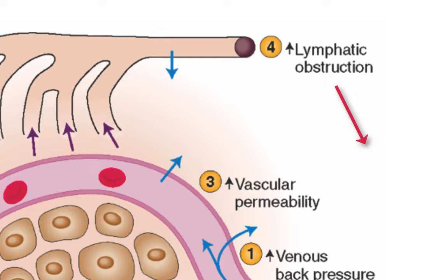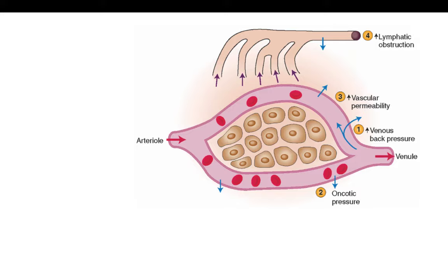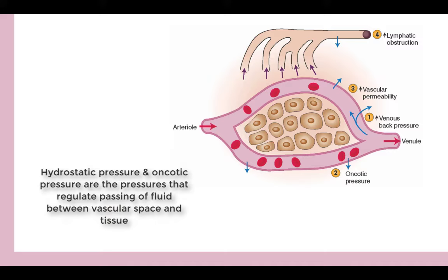So what are the factors that determine how much fluid passes to the tissue? There are two kinds of pressure that play a role: hydrostatic pressure and oncotic pressure. Also important is the permeability of the capillaries.